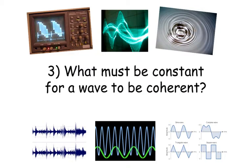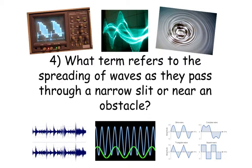Number 3. What must be constant for a wave to be coherent? Question 4. What term refers to the spreading of waves as they pass through a narrow slit or near an obstacle?